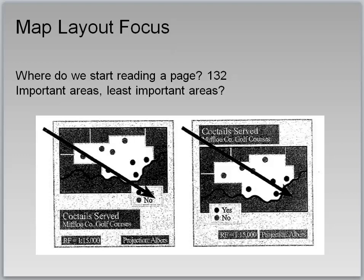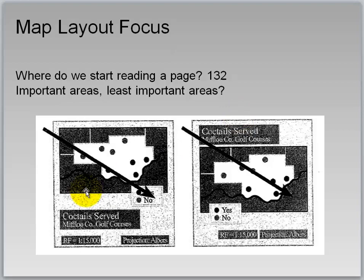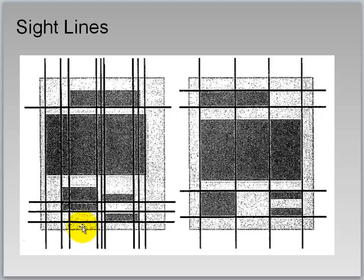Map layout focus: where do we start reading a page? Usually top left. Are we emphasizing the important areas or the least important areas? The map on the right is much more ideal. Visual center: the visual center should focus on the map itself — the item on the right achieves this. Sighting lines: the fewer the better. In the map on the left there are far too many sight lines for the elements on the page; the map on the right is much clearer and more easily understood.